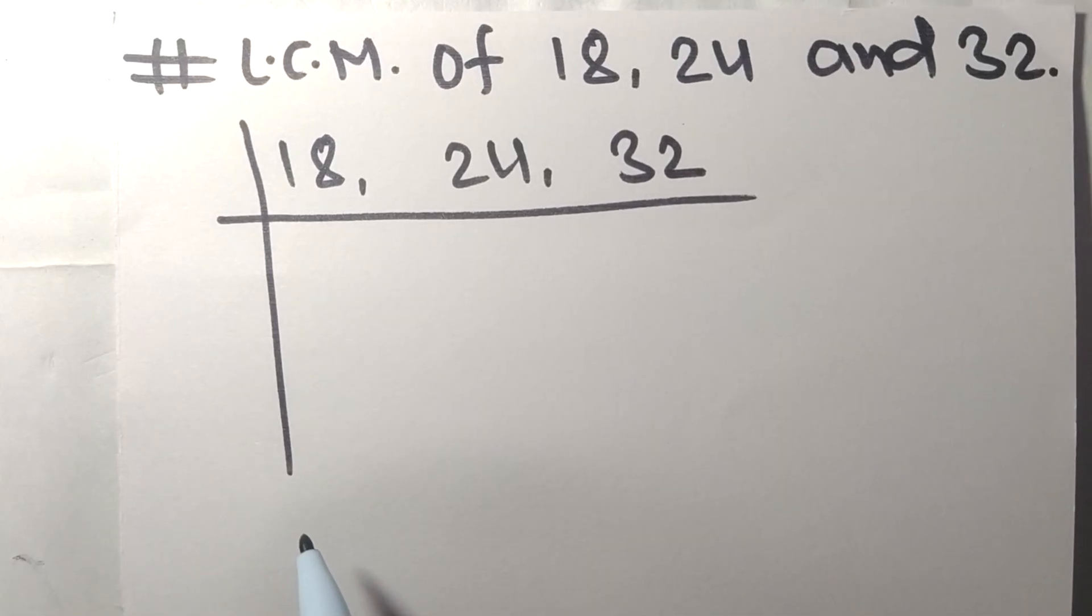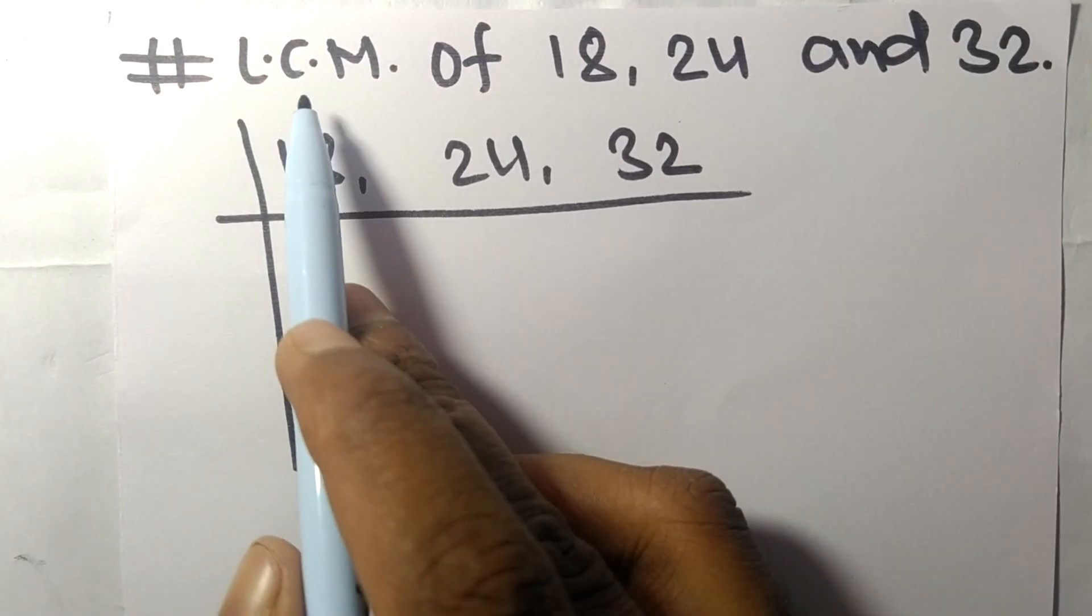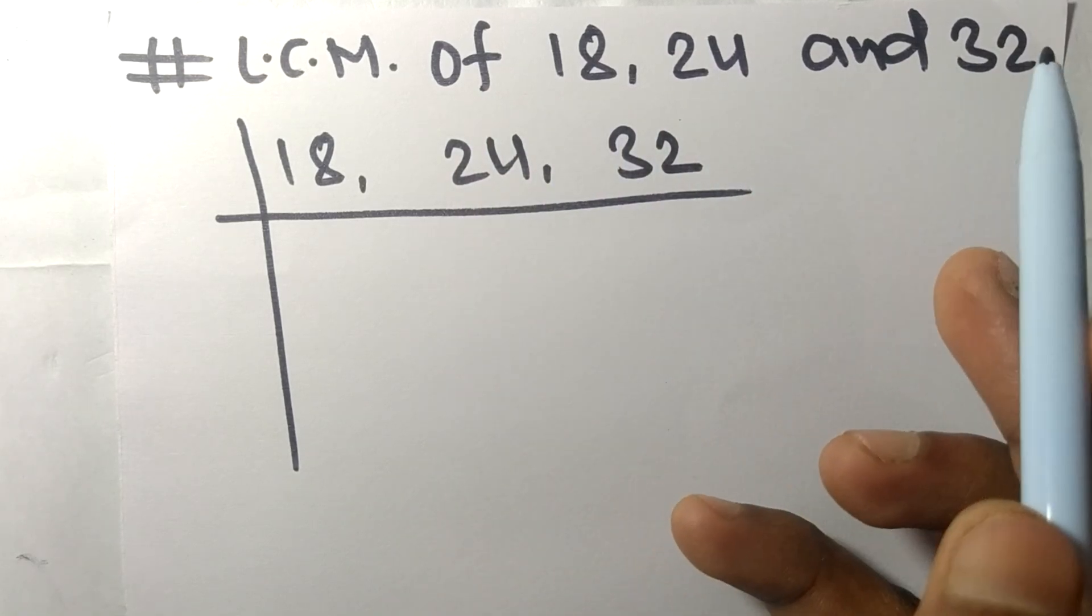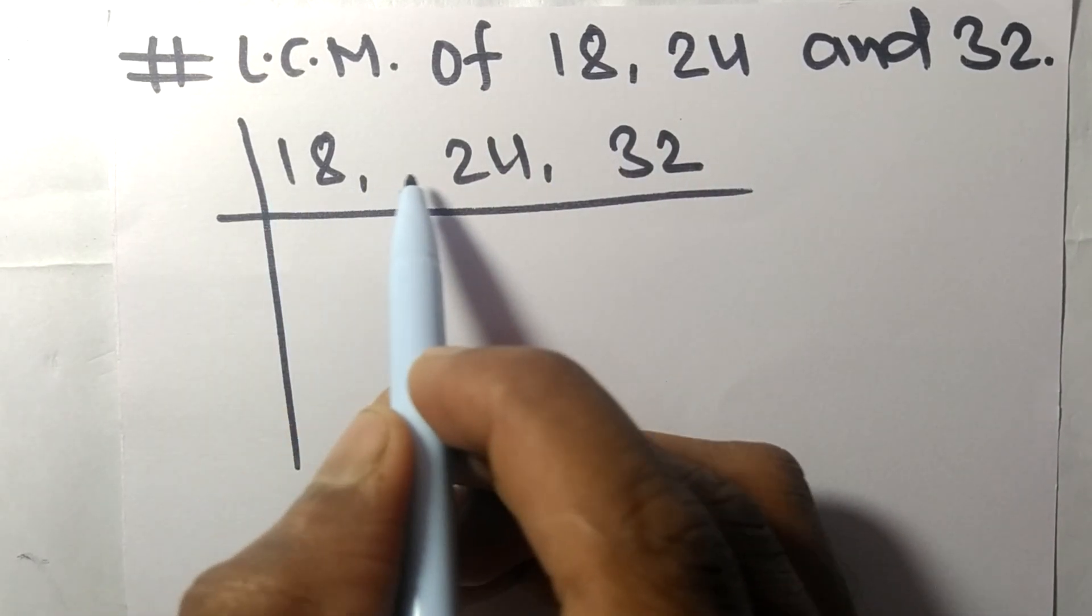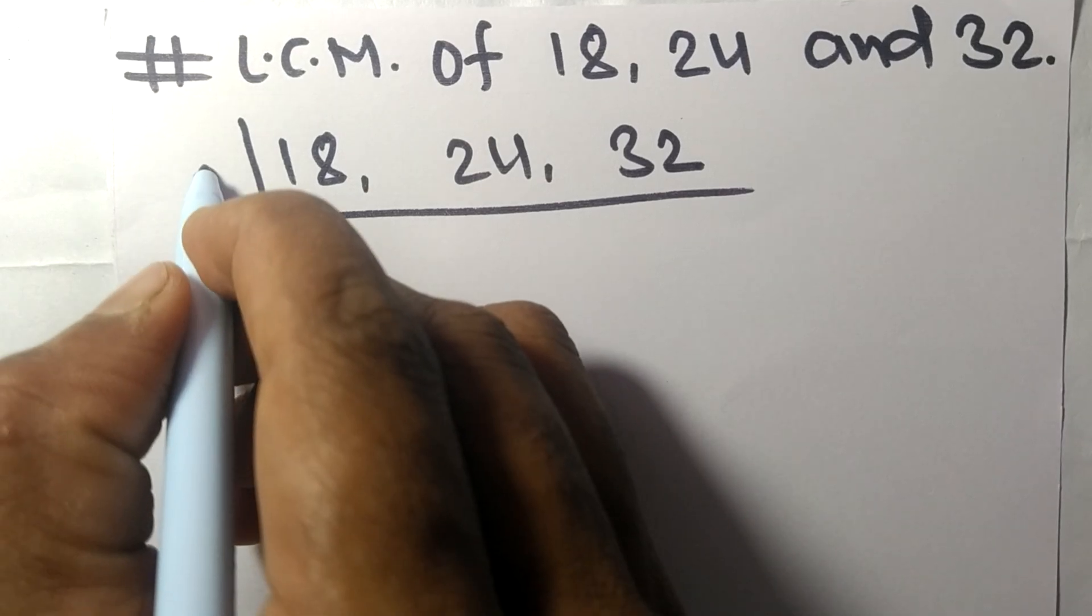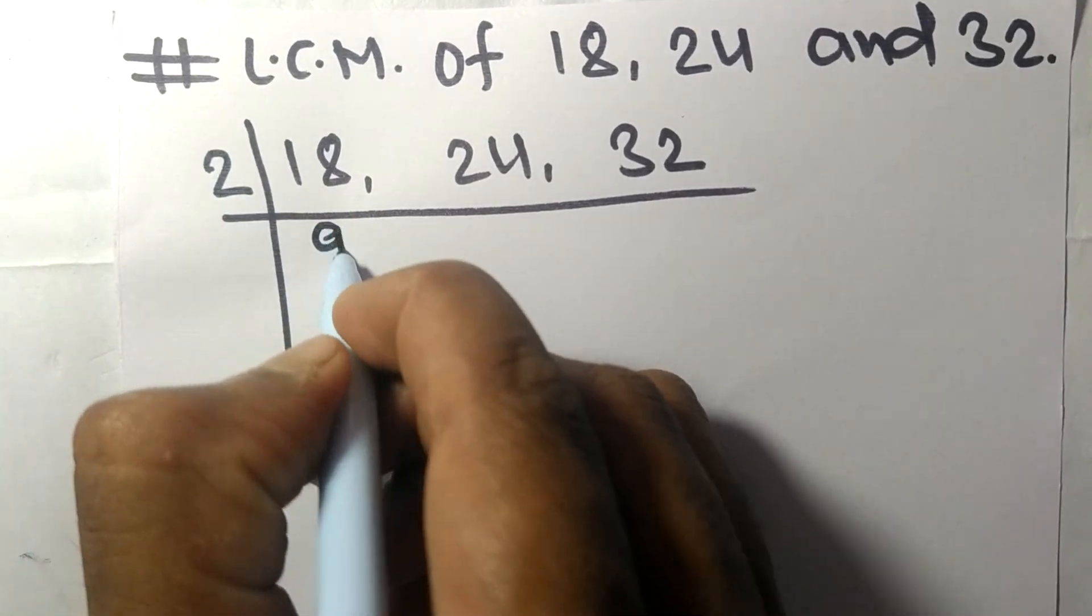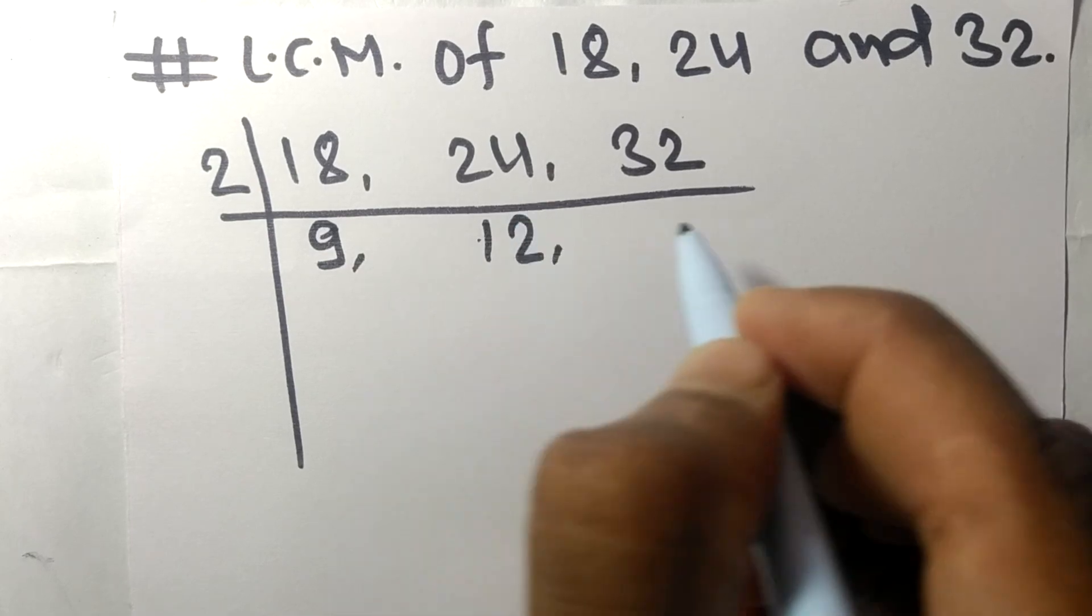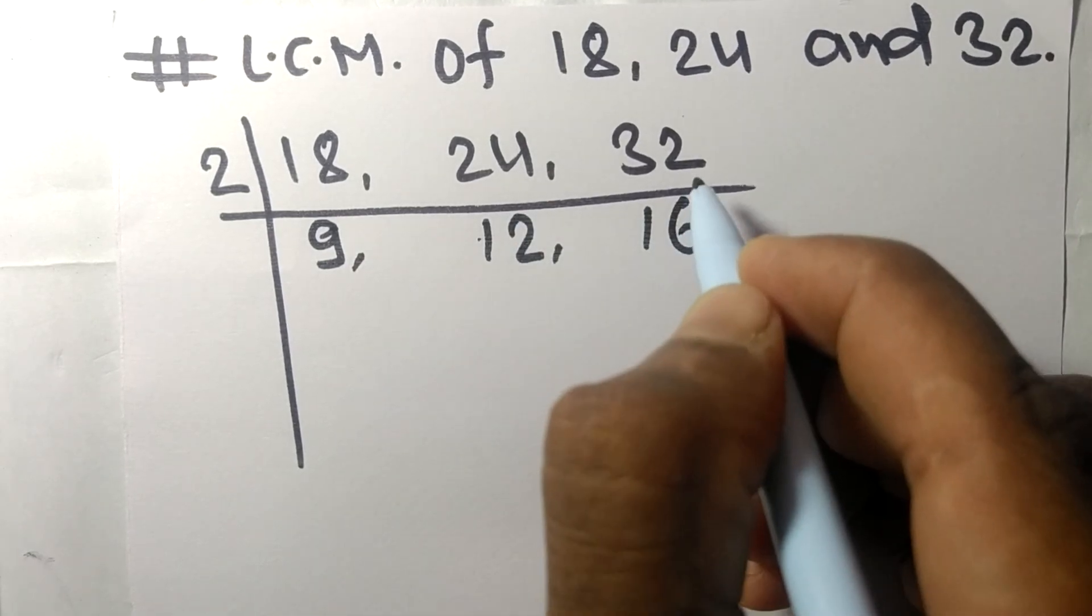Today in this video we shall learn to find the LCM of 18, 24, and 32. All these numbers are divisible by 2. 2 times 9 equals 18, 2 times 12 equals 24, 2 times 16 equals 32.